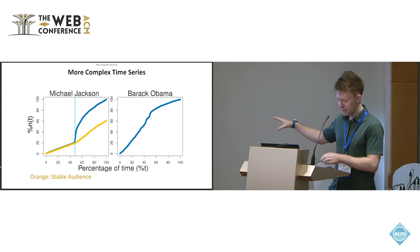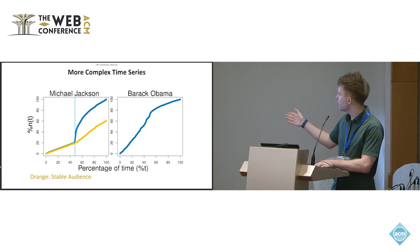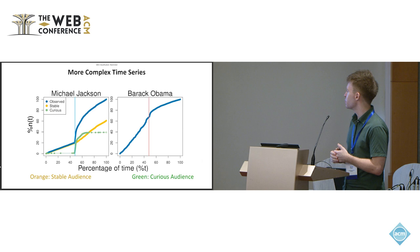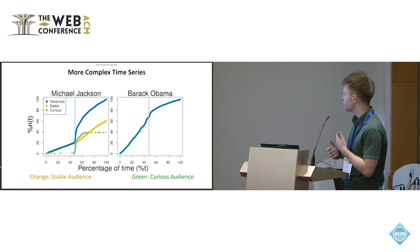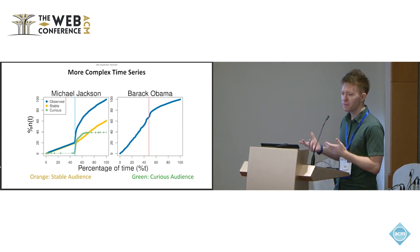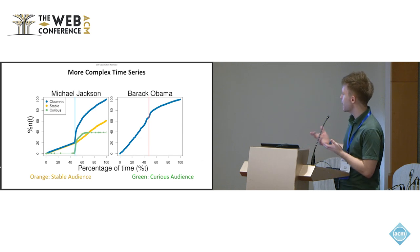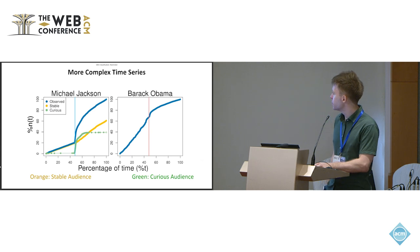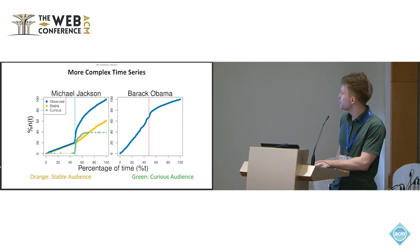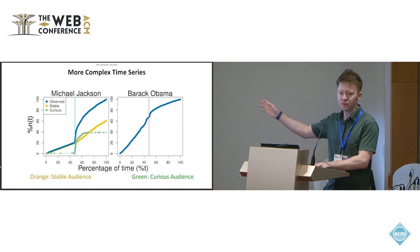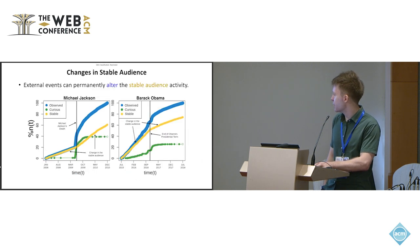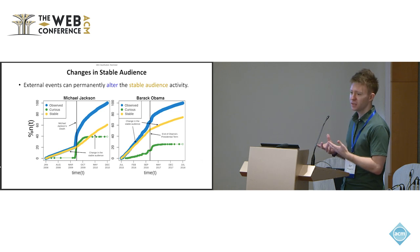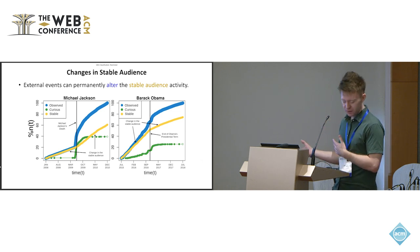So we're going to call this the so-called stable audience. But at the same time, we can see that at this kink in the graph, we also have an explosion of activity like the one that I described before. And this can be attributed to curious users, so that would be people that they might not be fans of Michael Jackson, but they perhaps want to see what's going on because of the sudden media exposure that this caused. So we have a similar phenomenon in the case of Barack Obama as well, with the transition occurring at the end of his second term in office.